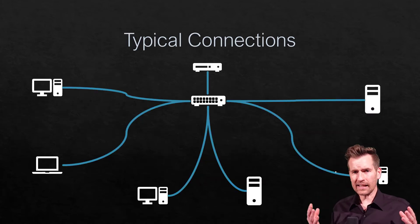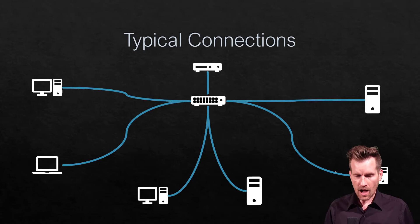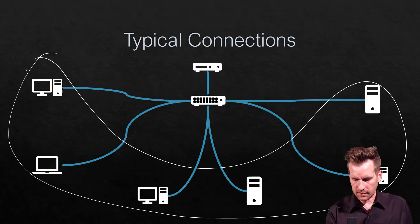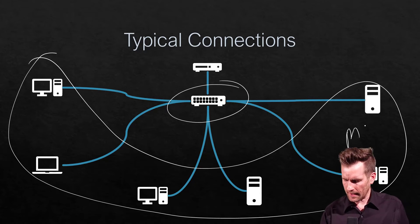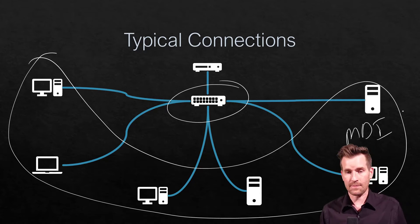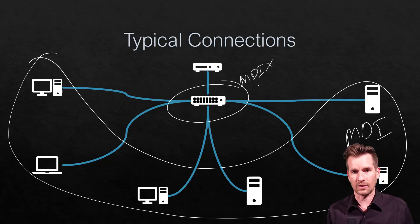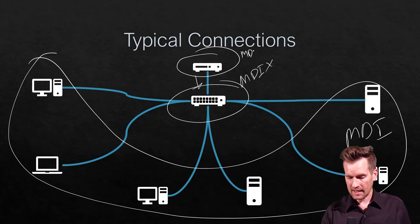Now let's look at what a typical network looks like. All devices on the outside plug into a switch — these devices are MDI-type connectors, while the switch tends to be an MDIX-type connector. The router also typically plugs into the switch and is an MDI type.